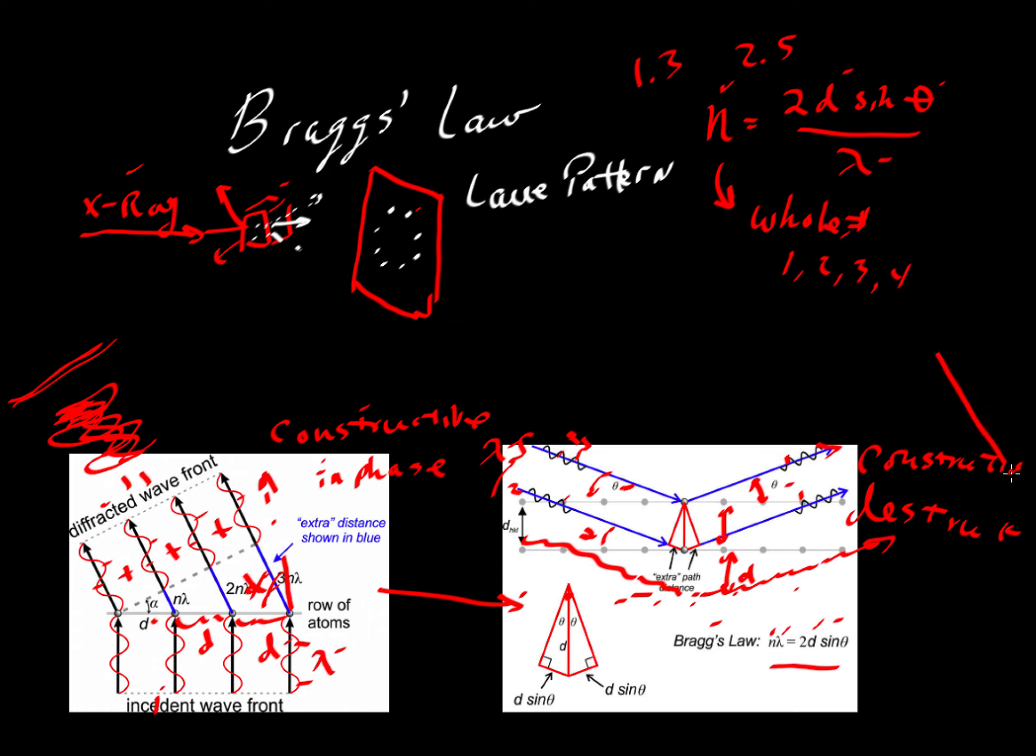So if we put a detector over here when n is a whole number, everything lines up and we'd get a very large amplitude wave and lots of energy hitting the detector. But if we pick some value of theta where we get some weird value of n, anything that's not a whole number, not necessarily weird I suppose, then we would get destructive interference between the waves and there would be very little or no energy recorded at the detector.